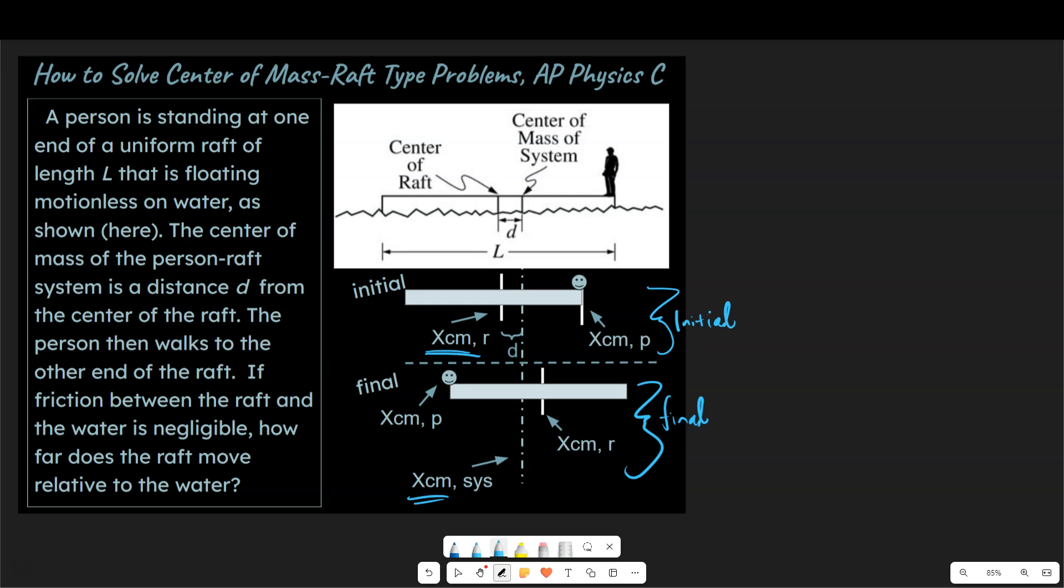So the man is applying a force on the raft and causing it to shift over. But that's just an internal force within the system. So with internal forces, yes the raft can shift, but the man also needs to shift. And center of mass is going to hold the same for both before the shift and after the shift because there's no external net force on the system at all.